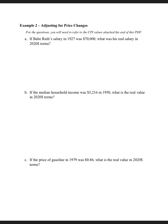The next question on this worksheet is about adjusting for price changes. We're given a bunch of different prices in different years, like Babe Ruth's salary in 1927, the median household income in 1950, and the price of gasoline in 1979.